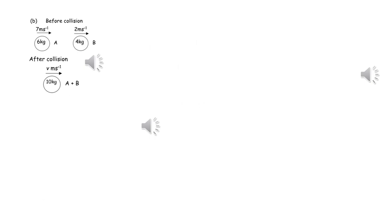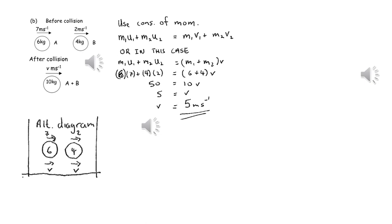In this example, after the collision, the two objects have joined together. The correct technical term for this is they've coalesced. Once again, we can apply conservation of linear momentum, so the momentum of the system before the collision is equal to the momentum of the system after the collision.